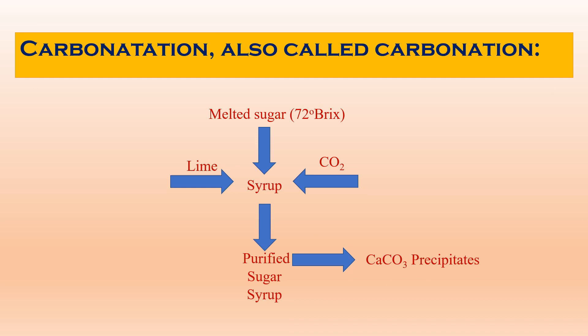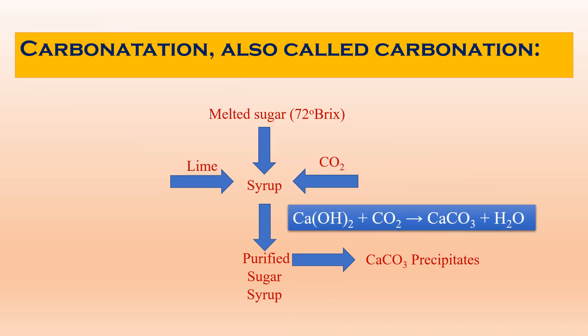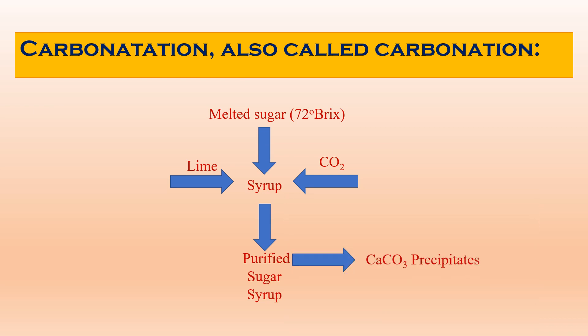Carbonatation is also called carbonation. Melted sugar is treated with lime, that is calcium hydroxide, and into this mixture carbon dioxide gas is pumped. The reaction between calcium hydroxide and carbon dioxide forms calcium carbonate, which removes the impurities, and we obtain the purified sugar syrup.